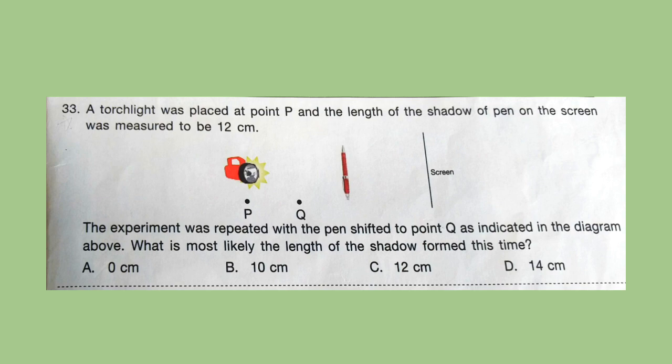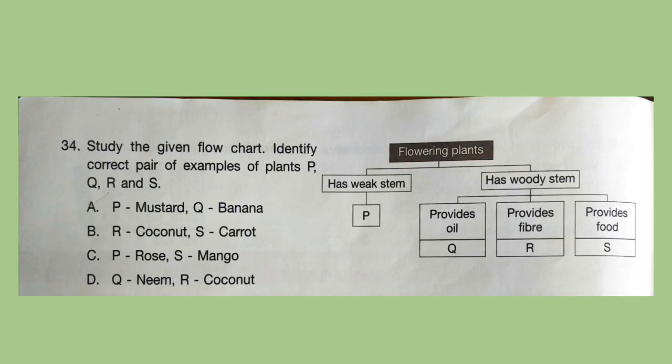Question 33: A torch light was placed at point P and the length of the shadow of a pen on the screen was measured to be 12 cm. The experiment was repeated with the pen shifted to point Q as indicated in the diagram. What is most likely the length of the shadow formed this time? Correct answer is option D — 14 cm. Question 34: Study the given flow chart. Identify the correct pair of examples of plants P, Q, R and S. Look at the flow chart and try to find out the answer. You can pause the video if required. Correct answer is option D — Q is neem and R is coconut.